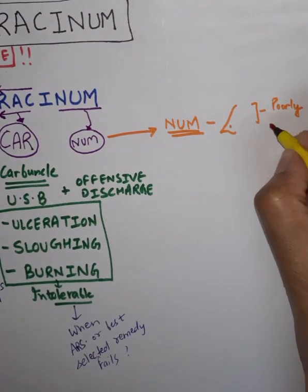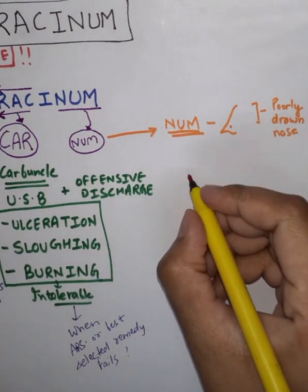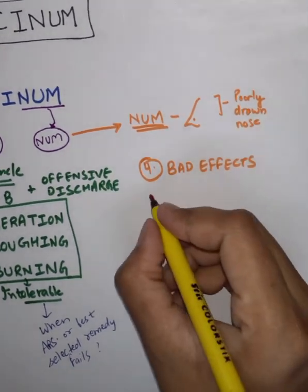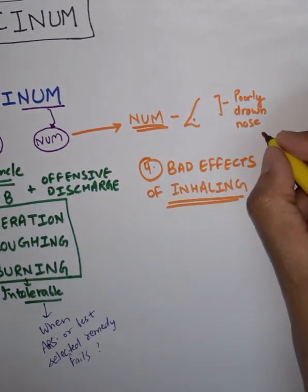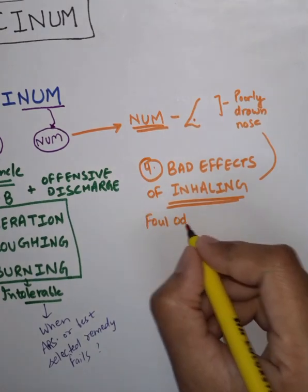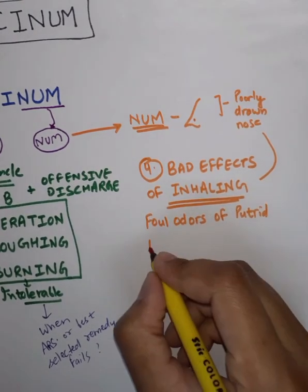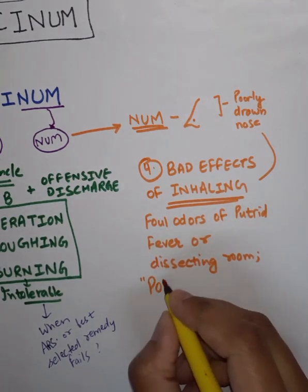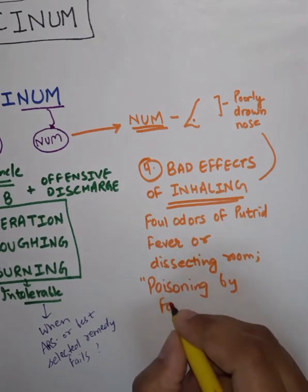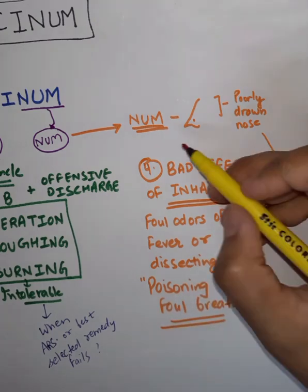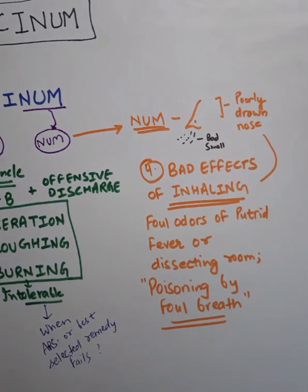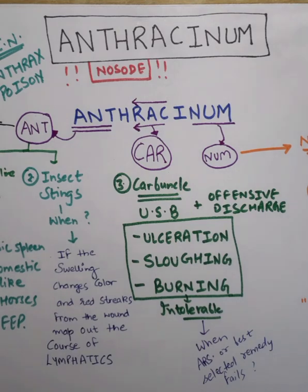NUM represents the nose. The fourth point is bad effects of inhaling foul odors — of putrid fever, or dissecting room poisoning by foul breath. This is a very good symptom: bad smell can cause poisoning in Anthracenum.